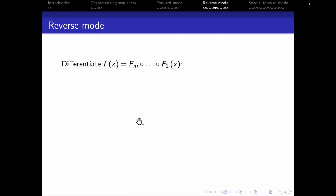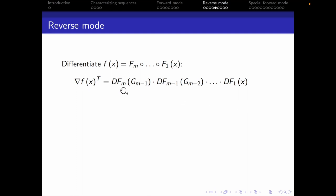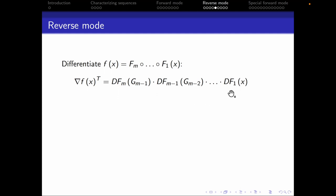The idea is now to differentiate this composition. We can use the multidimensional chain rule to get that the gradient of f(x) transposed equals the Jacobian of fm evaluated at g_{m-1}, times the Jacobian of f_{m-1} evaluated at g_{m-2}, all the way down to the Jacobian of f1 evaluated at x.